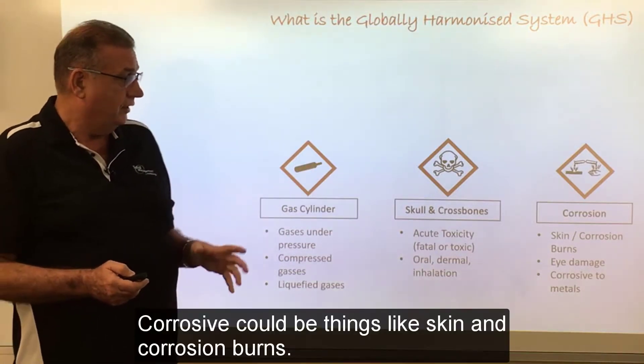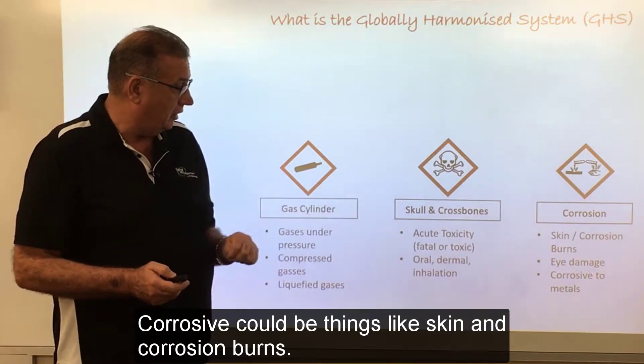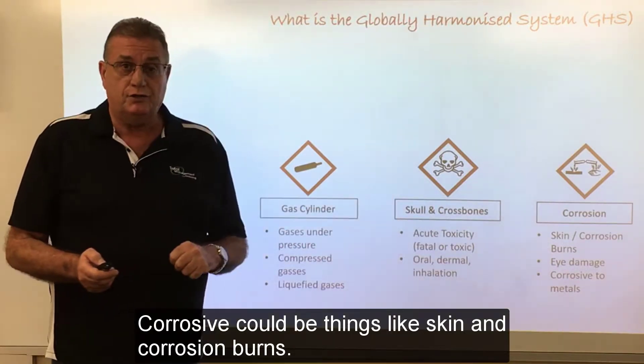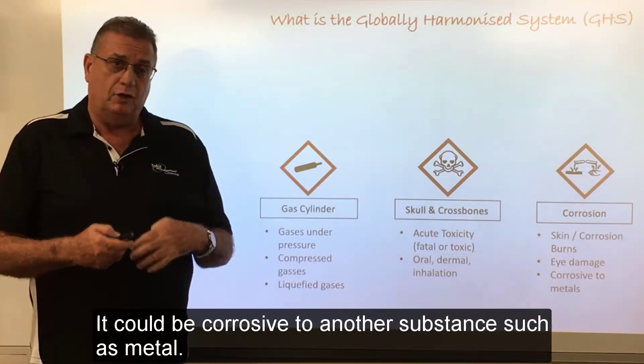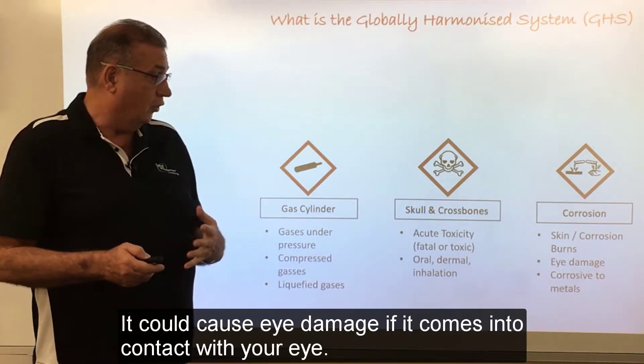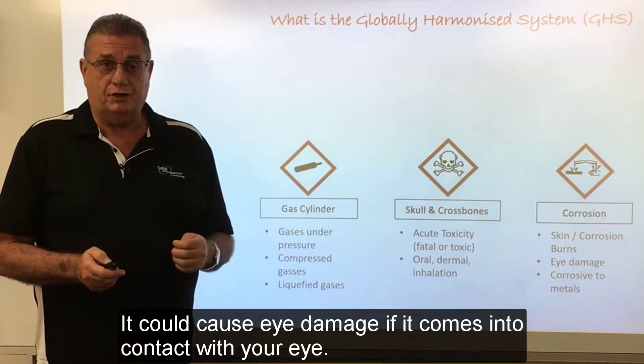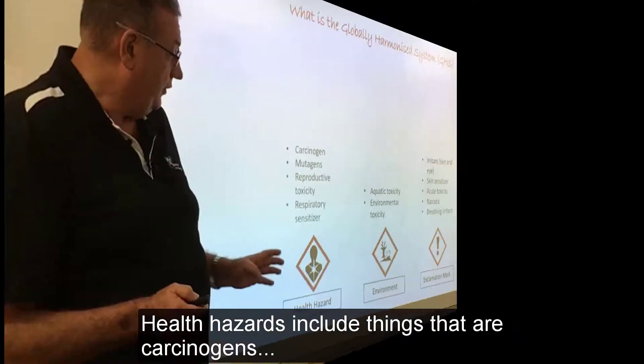The corrosive pictogram covers things like skin corrosion and burns. It could be corrosive to another substance such as a metal, or it could cause eye damage if it comes into contact with your eye.